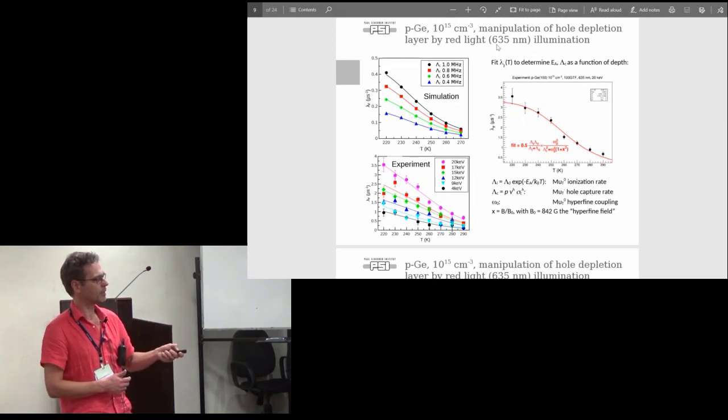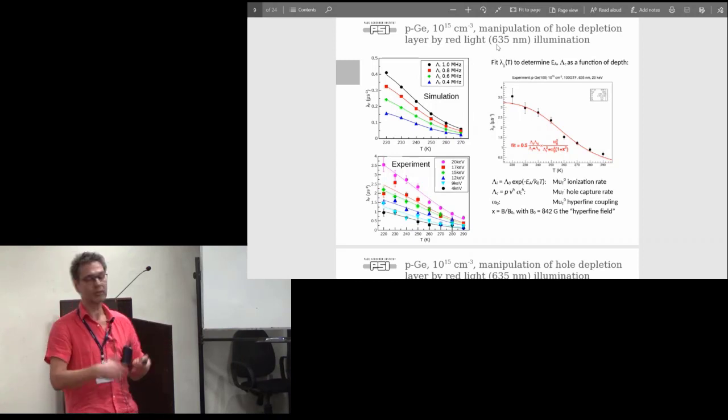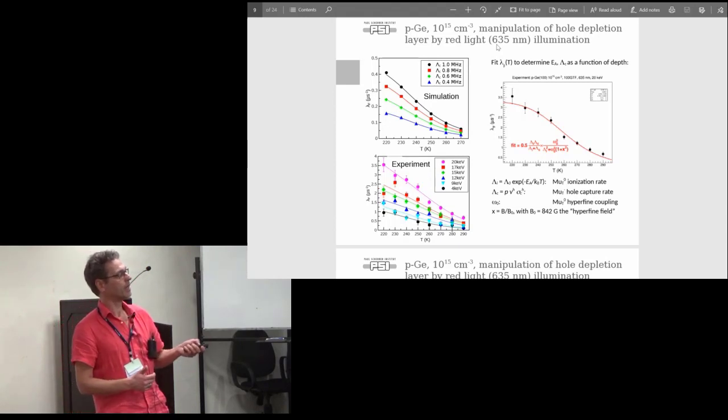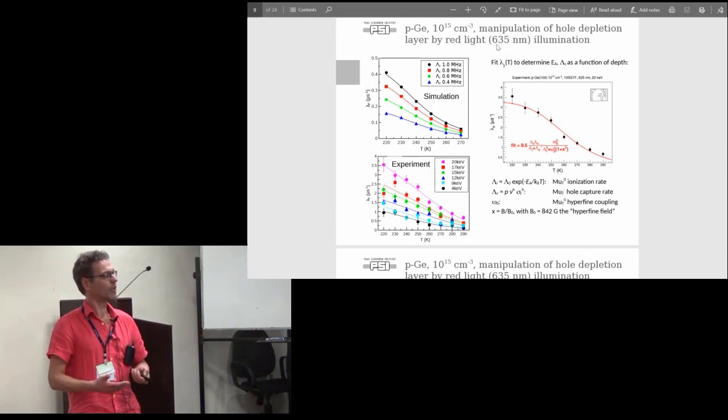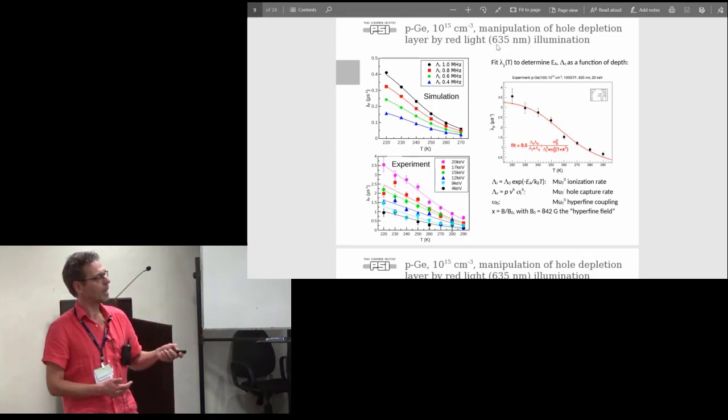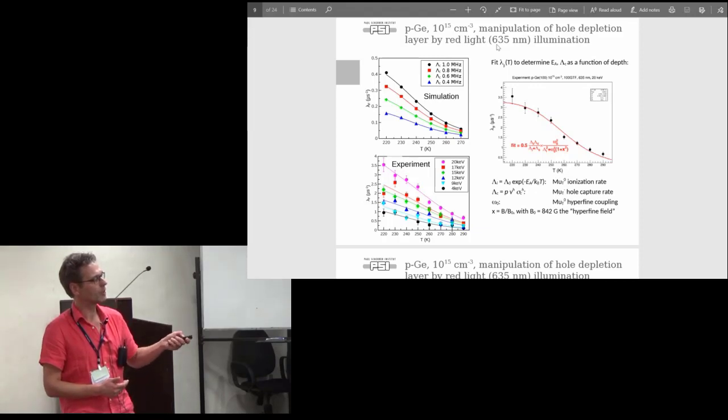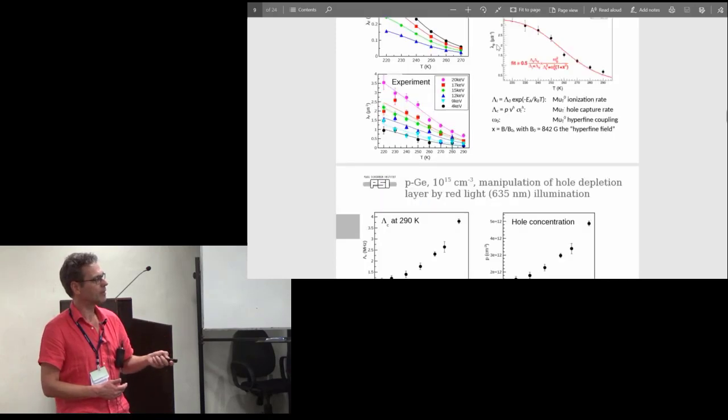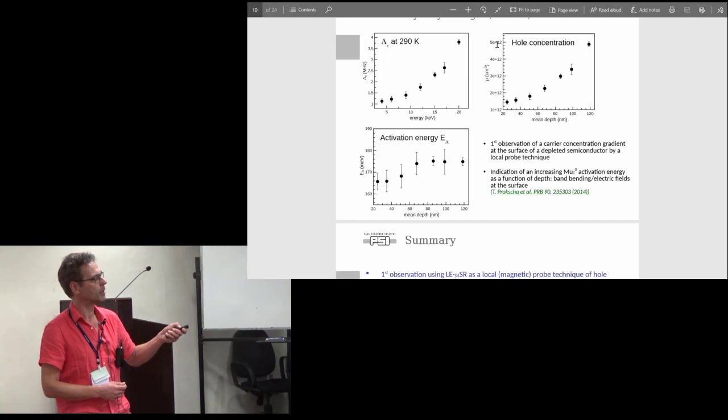We see temperature scans at different implantation energies. At each temperature the depolarization rate increases as a function of energy. This already tells you that the hole capture rate increases as a function of depth, showing the hole carrier concentration increases as a function of depth. We did temperature scans because the data can be described by this formula where we have the ionization rates given by the activation energy and the hole capture rate. We can fit both together for all these data sets.